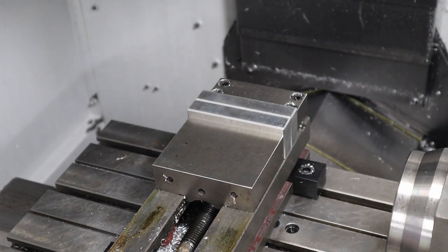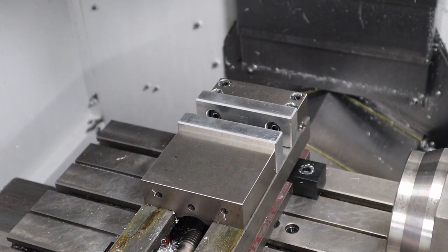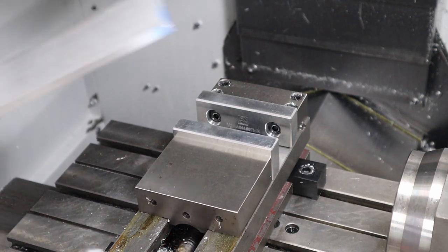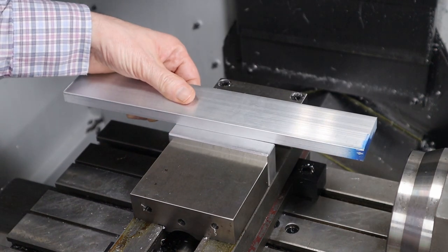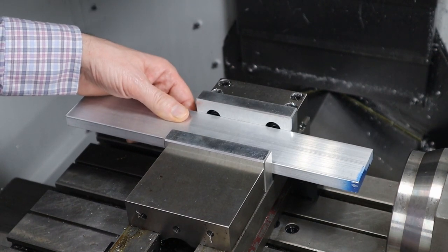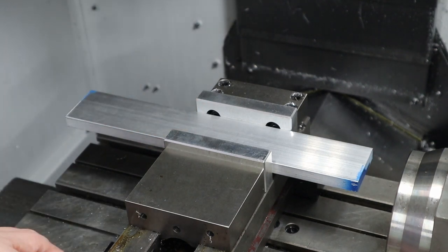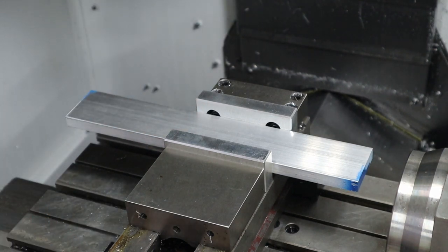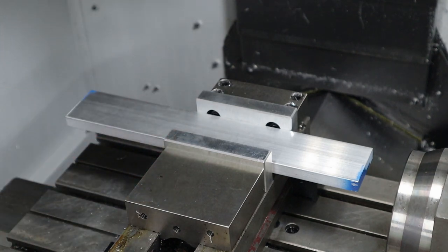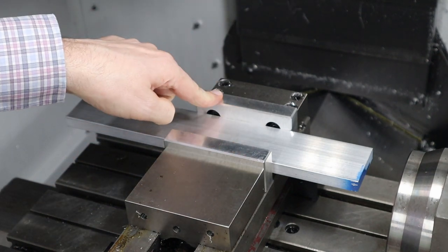The next thing I need to do is put in a piece of 2 inch stock in between the two soft jaws so that I have pressure on them while we mill the soft jaws. Now we're ready to set up the coordinates and then start milling the soft jaws.